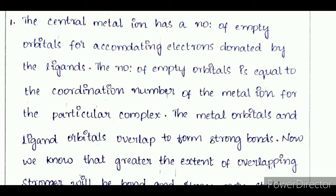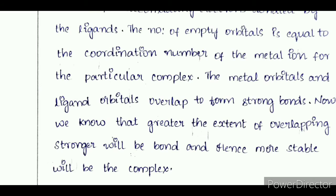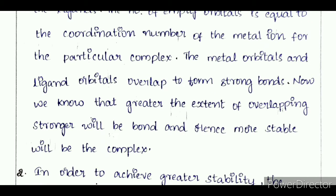The coordination number of the metal ion determines the particular complex. The metal orbitals and ligand orbitals overlap to form strong bonds — sigma bonds. We know that the greater the extent of overlapping, the stronger will be the bond, and hence the more stable will be the complex.